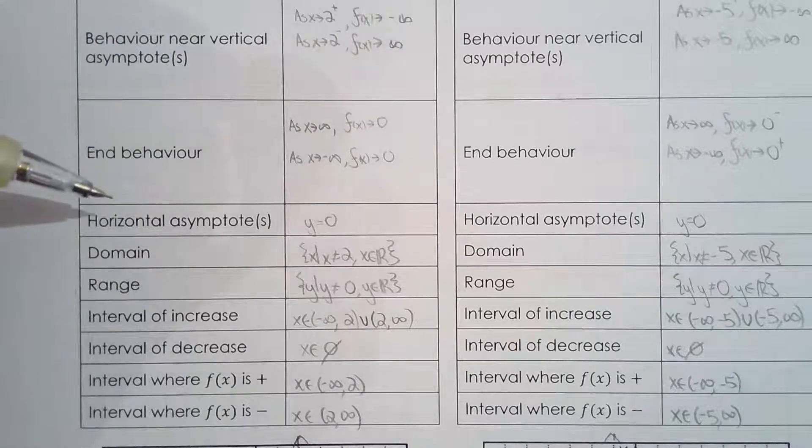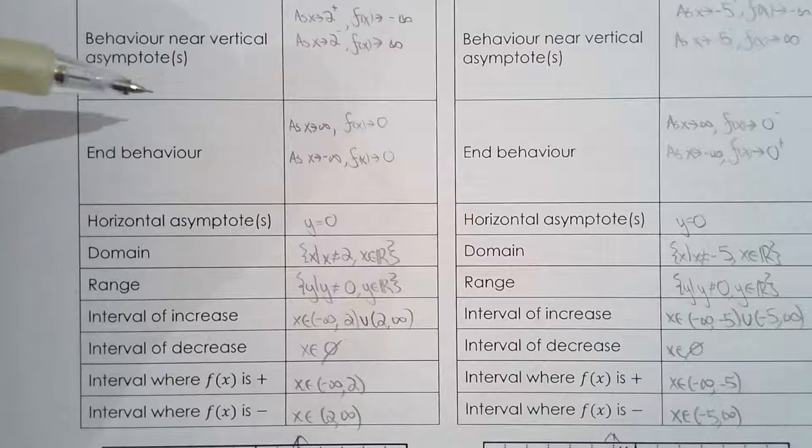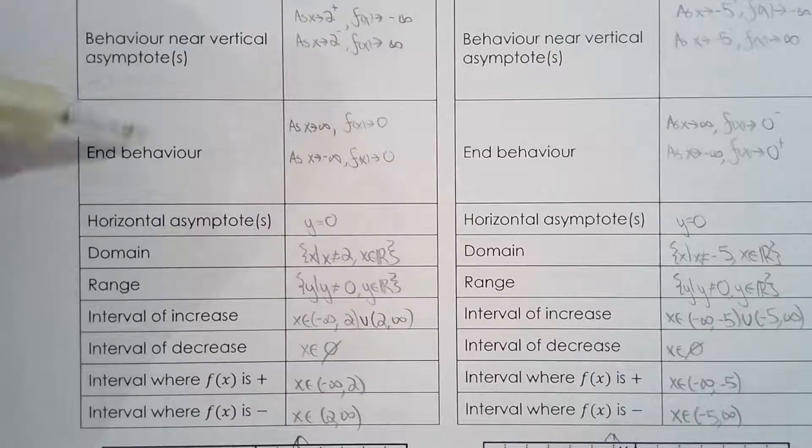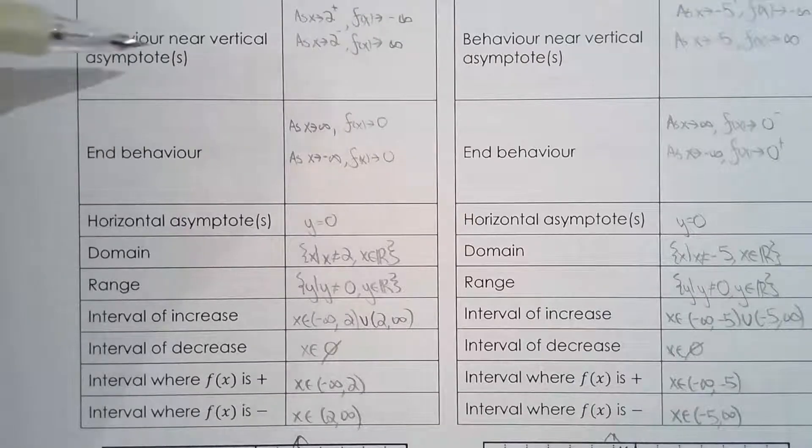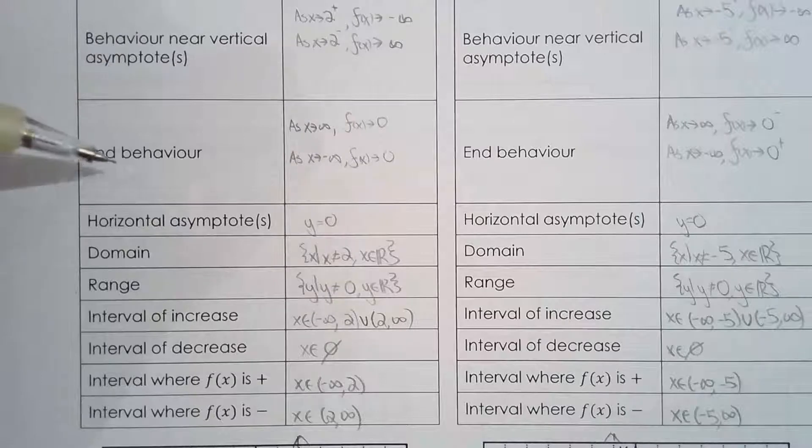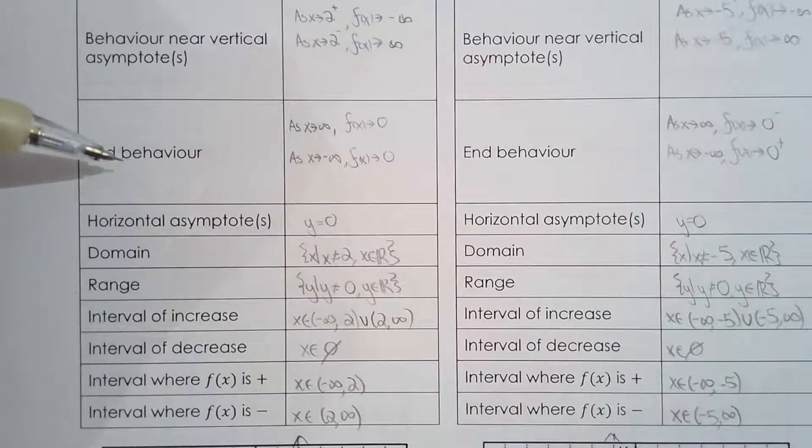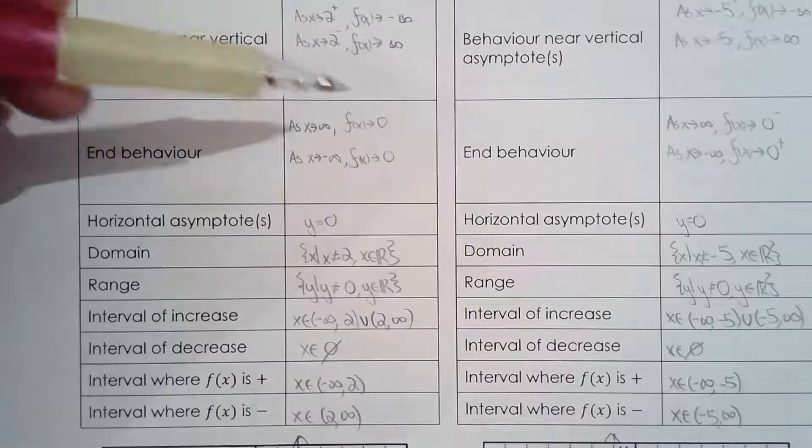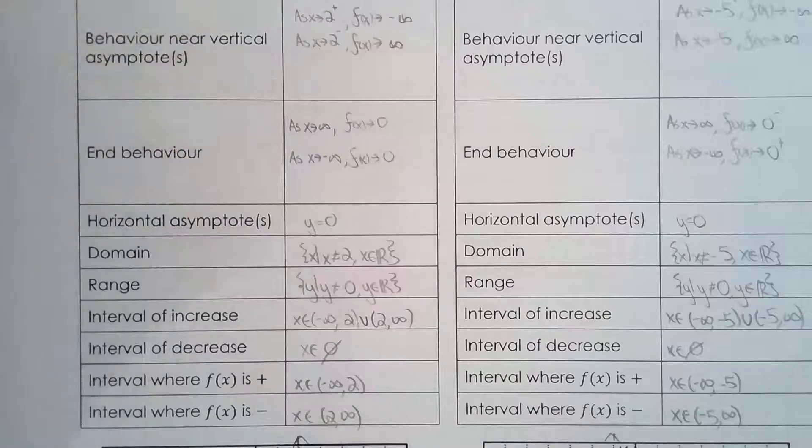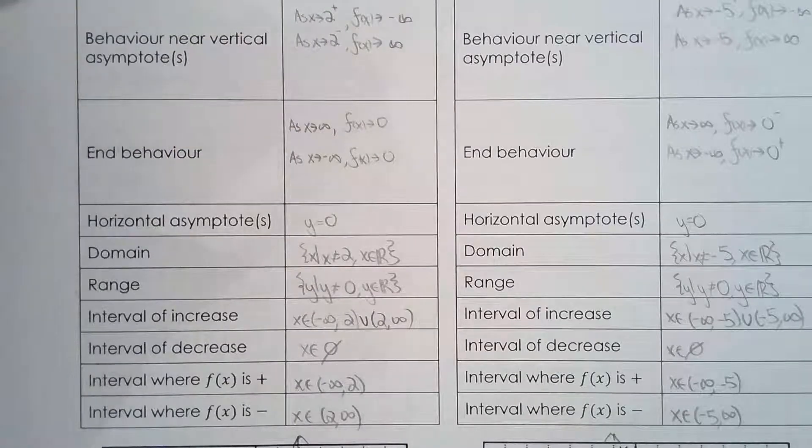One thing I forgot to mention in the lesson is that for whatever reason, students always confuse these two: behavior near vertical asymptote and end behavior. They're very, very different. But I don't know, it's the confusion with the notation or something, students always get confused.